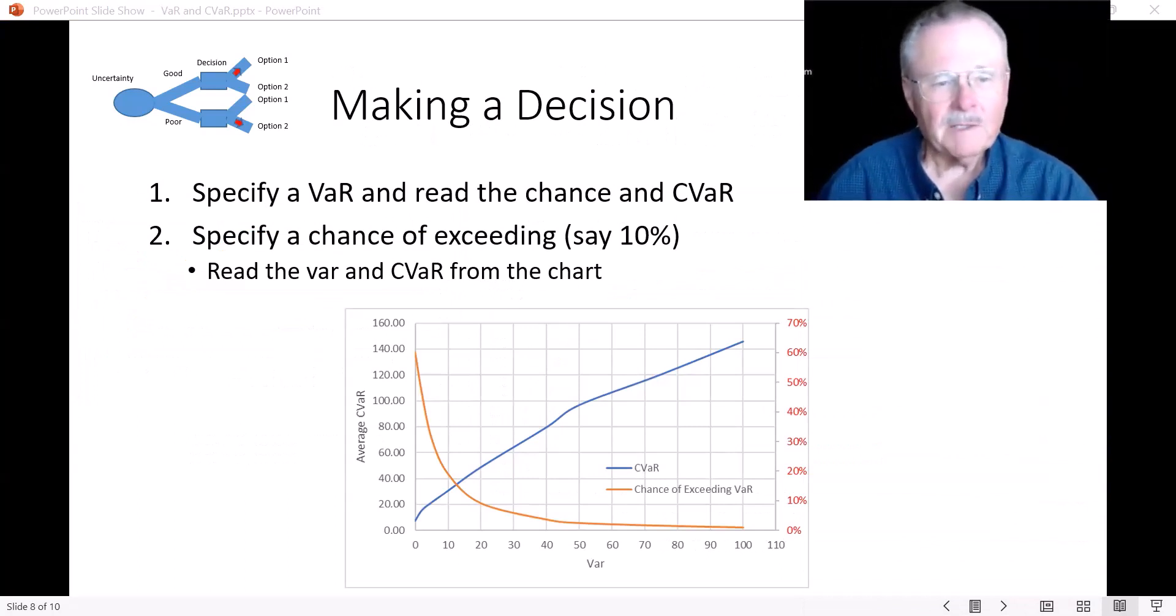So how does the decision maker make a decision? Well, as I've already said, they can specify a VaR and read the chance and CVaR from this graph. So let's say if they had the VaR of 20, that means the CVaR would be kind of like 50. And also at that VaR of 20, the probability of incurring that expected value is only roughly 10%.